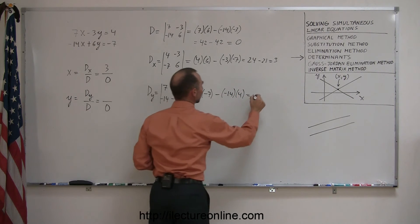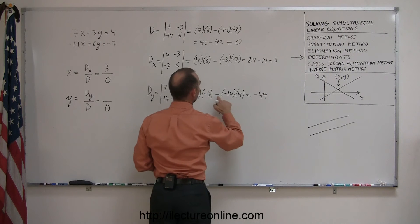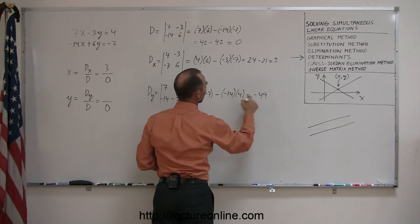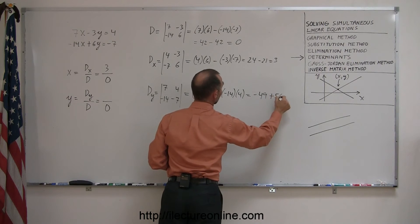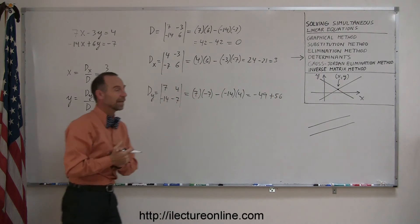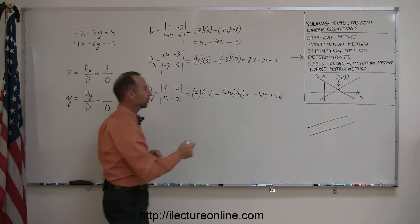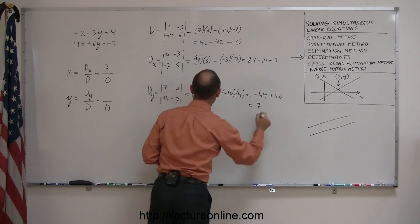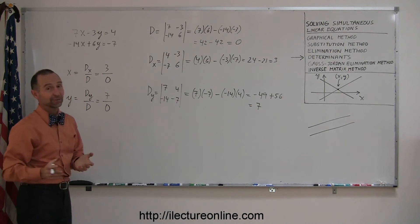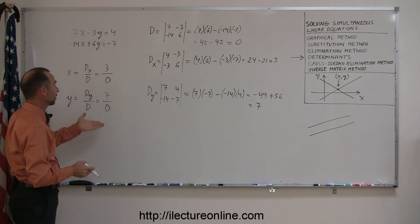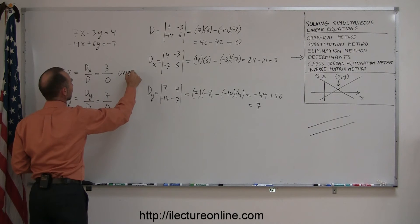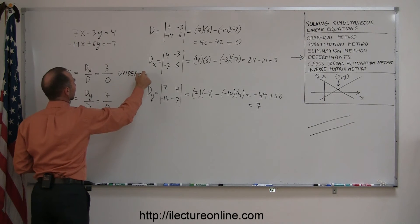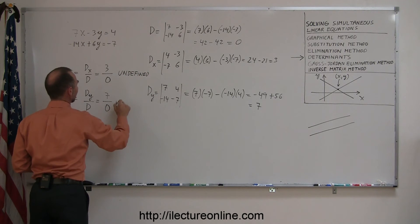So 7 times negative 7 is minus 49. And a minus times the minus, that's 56. That's a positive 56, because a negative times a negative gives me a positive. And so this becomes a positive 7. But again, just like we discovered before, if you're going to divide by 0, you get an undefined number, so that's undefined.